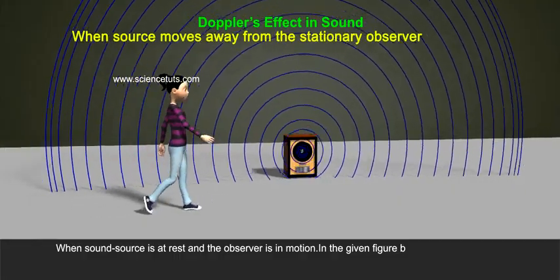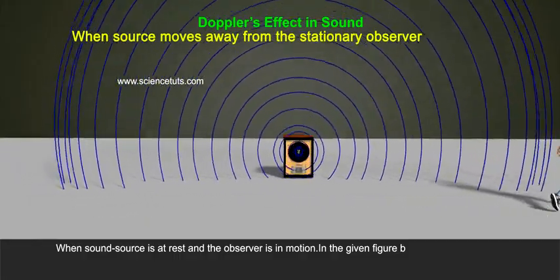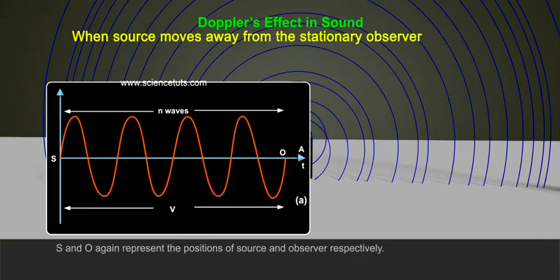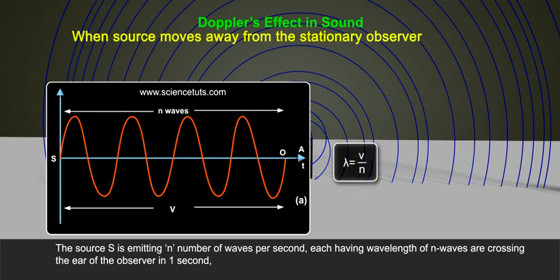When sound source is addressed, the observer is in motion. In the given figure B, S and O again represent the positions of source and observer respectively. The source S is emitting n number of waves per second, each having wavelength lambda equals to v by n of n waves.